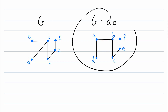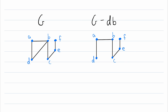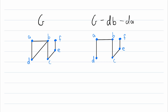In this case we're deleting edge DB, so we go ahead and get rid of that — and there is our graph G minus DB. Now let's say we wanted to delete an additional edge from this graph, say edge DA. Then we could write that as G minus DB minus DA, and deleting that edge, this is the graph we would be left with.